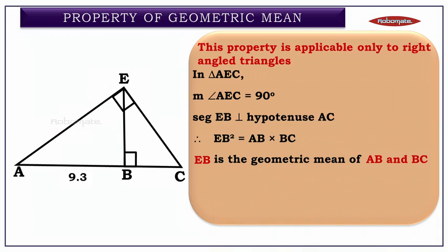Suppose AB is 9.3 and BC is 1. Then EB² = AB × BC = 9.3 × 1, so EB² = 9.3. If EB² is 9.3, then EB will be √9.3.